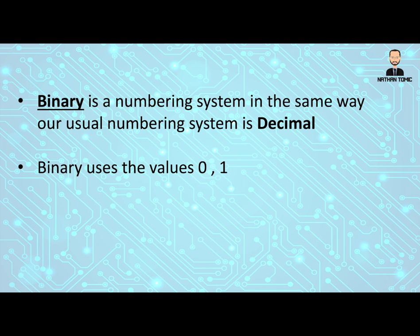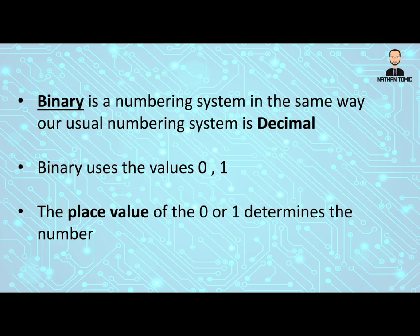Binary uses the values 0 and 1 to represent all numbers. And again, it's the place value of either the 0 or 1 that determines what the number actually is.